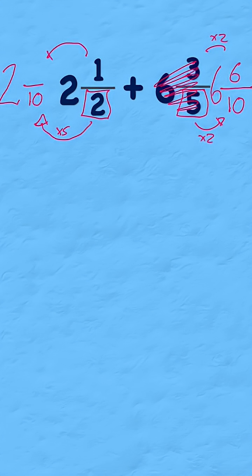So the same thing has to be done to the numerator. One times five is five. So now I can get rid of two and a half. I end up with two and five tenths.